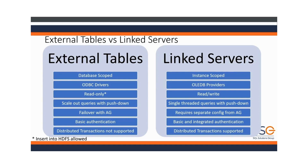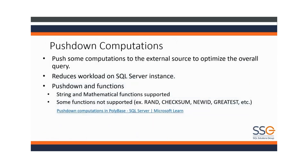Before getting into the demo, I want to talk about push-down computations. We originally assumed linked servers must be slow because the query brings all the table data back and then does all the computations on the calling side. We found that's different in SQL Server 2019, but one of the great things about PolyBase is that it actually pushes down aggregations and computations to the source and only returns the results.